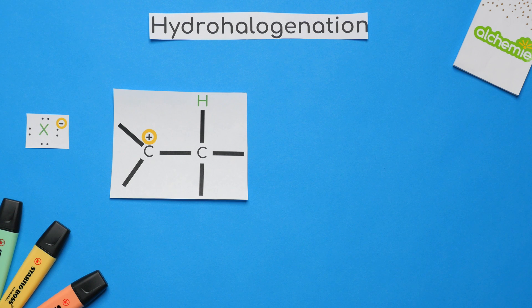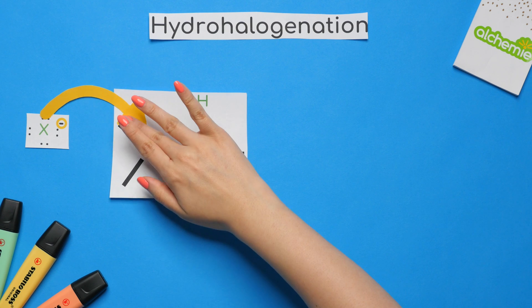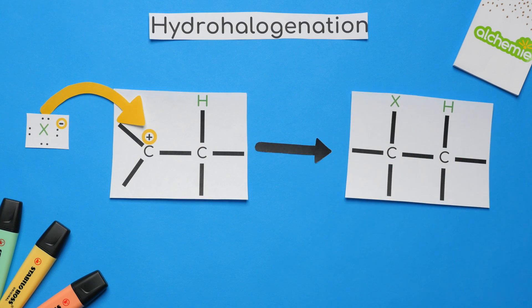Continuing on, what happens next in this reaction is called a nucleophilic attack. This is where our new nucleophile, which is the halogen, attacks the carbocation and attaches onto that carbon to give us our product.